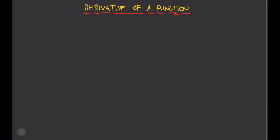We're going to start off by defining the derivative. Here's the definition of the derivative of a function. You have f prime of x — f prime is the notation for derivative — equals the limit of f of x plus h minus f of x divided by h, as h approaches 0.